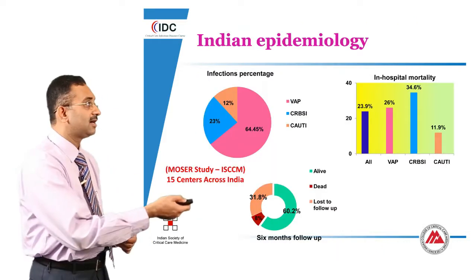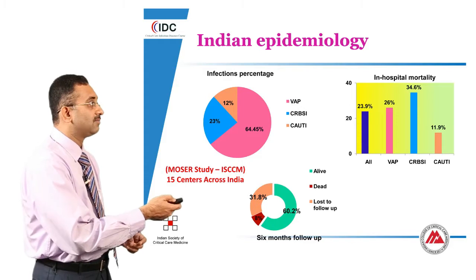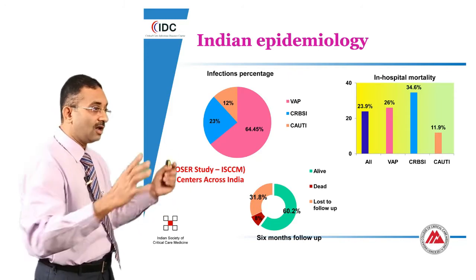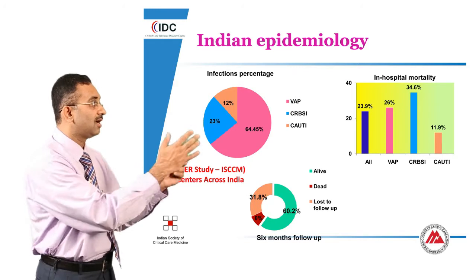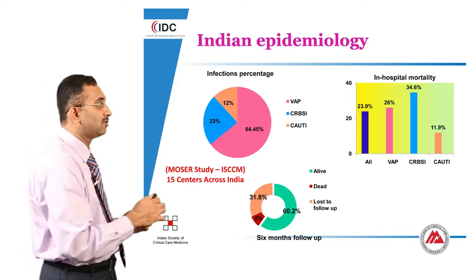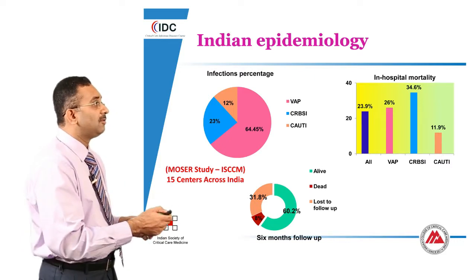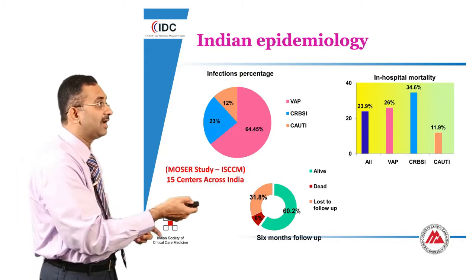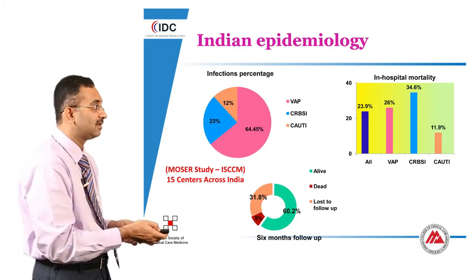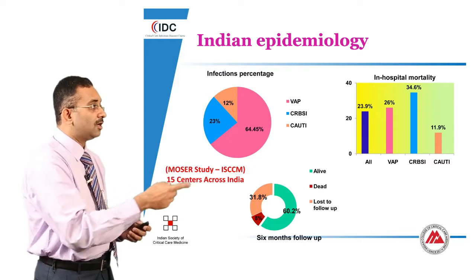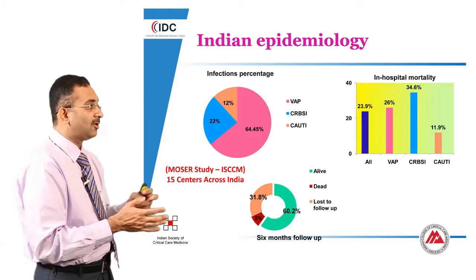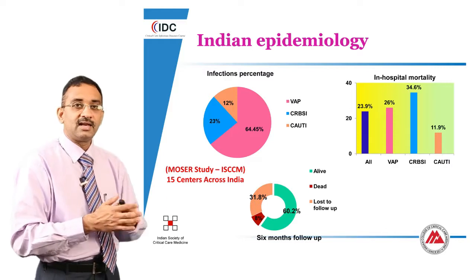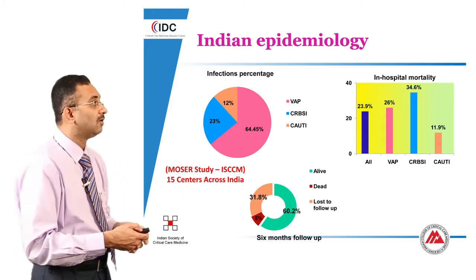How about India specifically? This is data we have collected — not yet published — but you can see that ventilator-associated pneumonia rates are about 65% of all ICU infections, almost two-thirds. About one quarter seem to be CRBSI and a small proportion CAUTI. Our mortality for catheter-related bloodstream infections is very similar to the Rosenthal study — almost 35% — because almost all these patients are bacteremic. Looking at six-month follow-up, two-thirds of patients are alive, about 10% are dead, and the other 30% were lost to follow-up, but there is reasonable survival if you can get them out of the hospital.